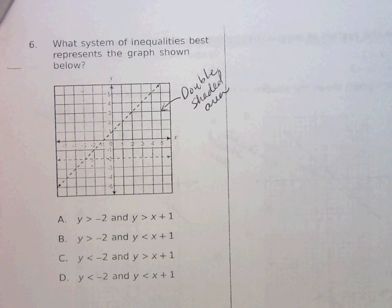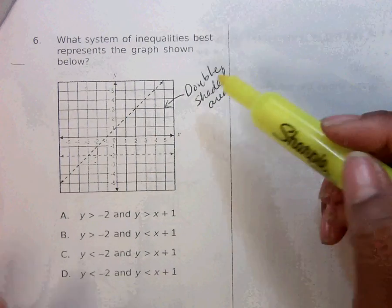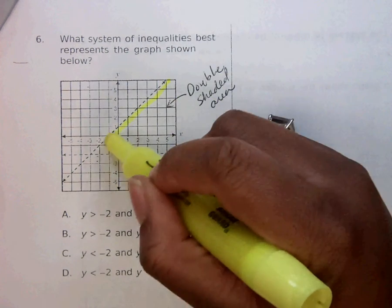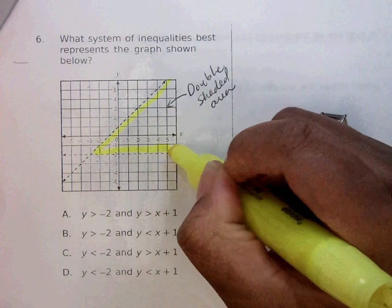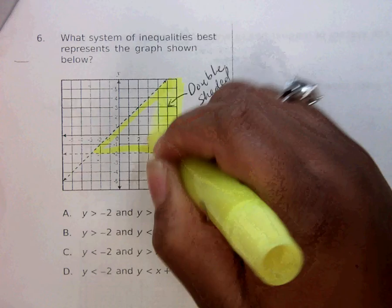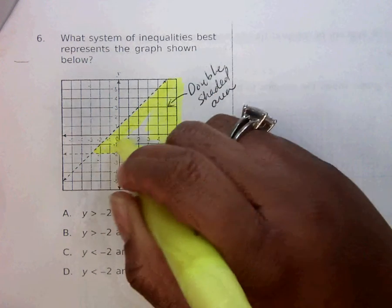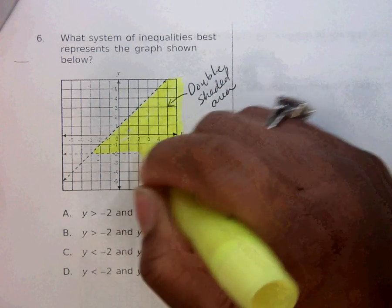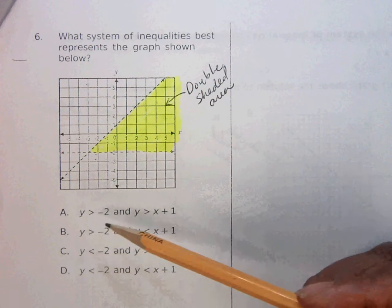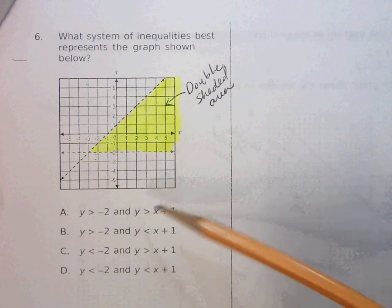What system of inequalities best represents the graph shown below? It says the shaded, double shaded area should be here. So I'm going to highlight this for my solution set and try to stay within the lines. And they are both dashed. I noticed that, so I do not need a line under any of the answer choices. Awesome.